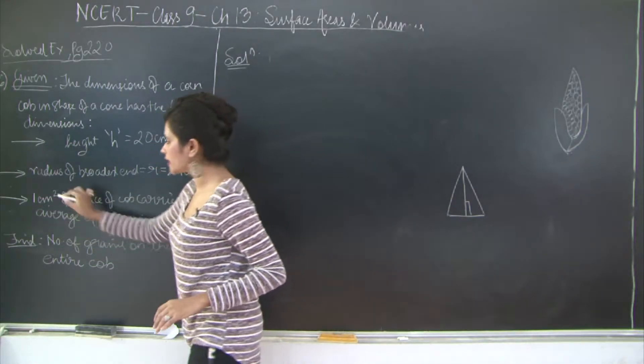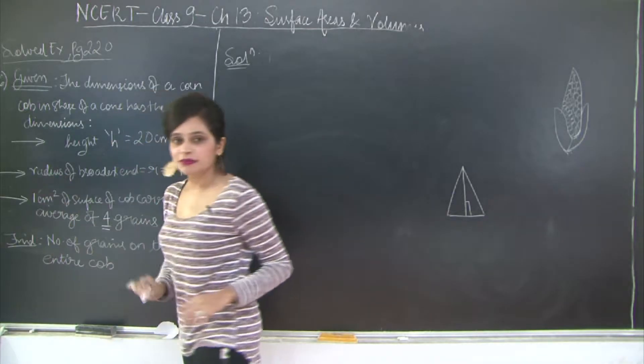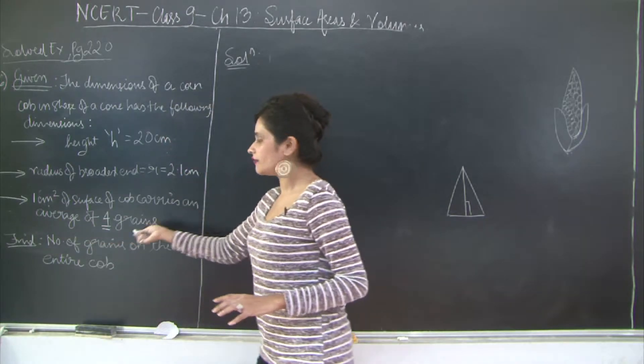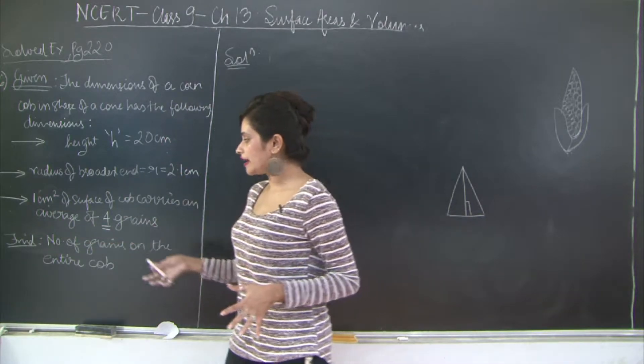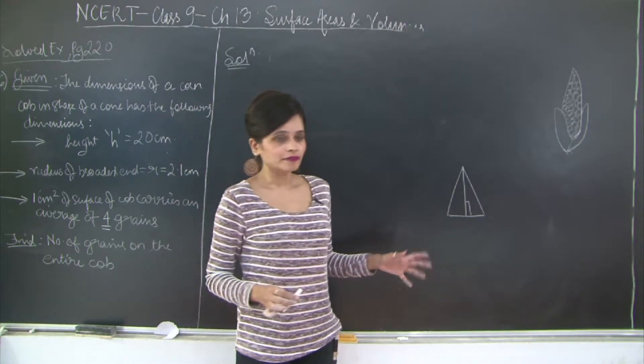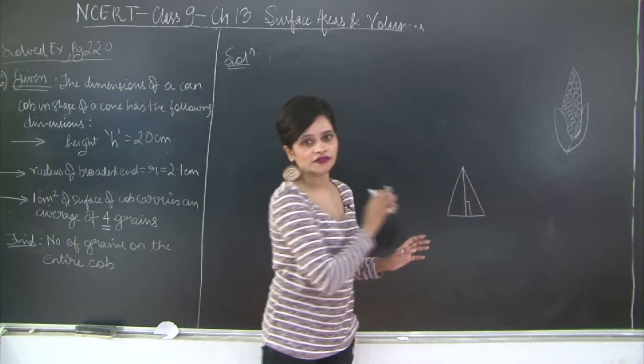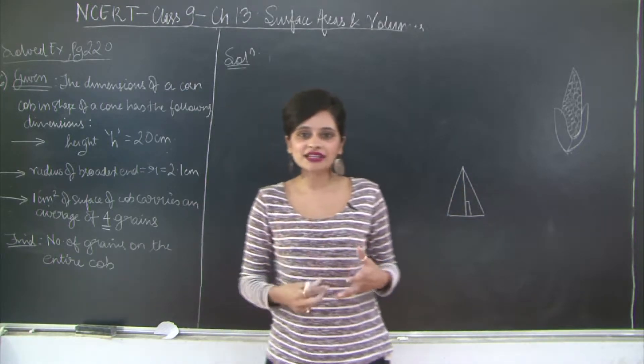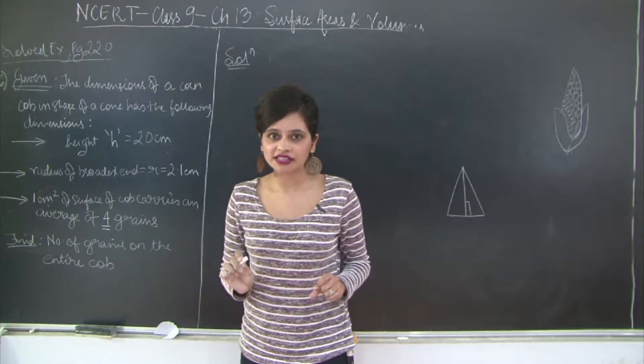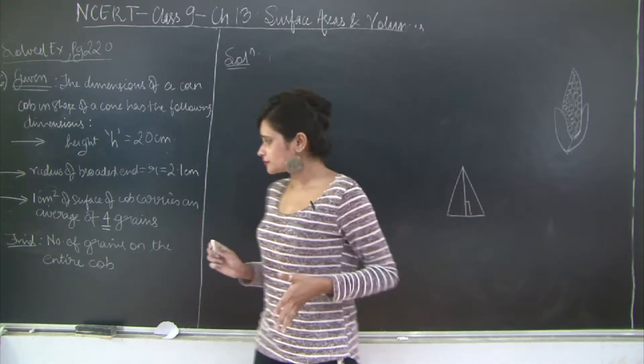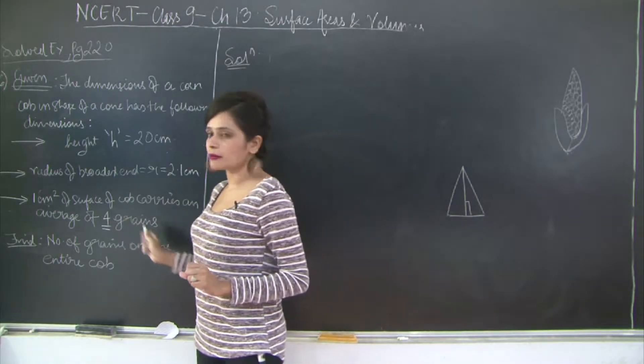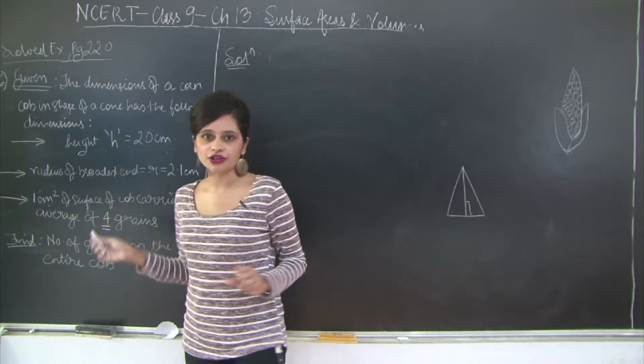When you say 1 cm², this unit specifies an area. That means an area of 1 cm² covers 4 grains. We need to find the number of grains on the entire cob. Now we know that for a cone, the grains are there only on the curved surface area. At the base you just have the stem or stick. So we will first have to find the curved surface area of this cone or cob. Once you find the curved surface area, you can use unitary method to find the total number of grains.